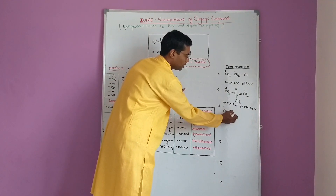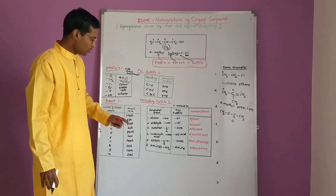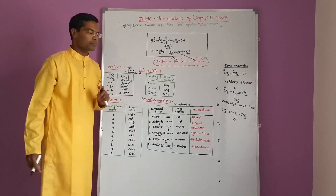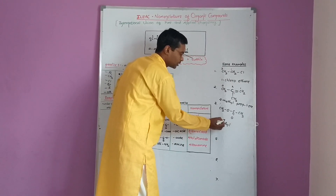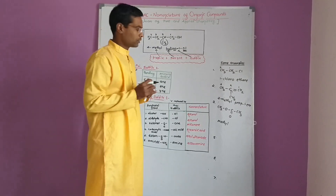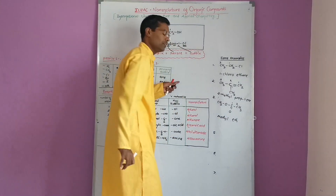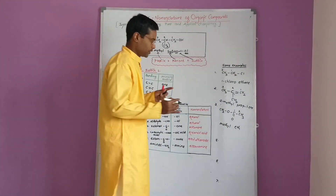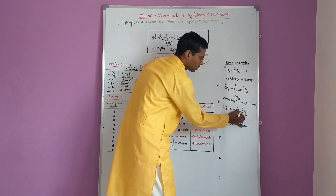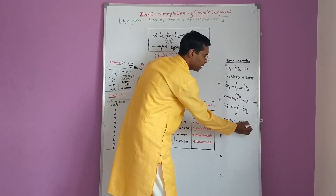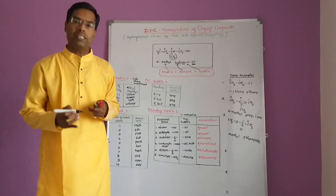Third example: CH3-O-C(=O)-CH3. This is an ester, because the functional group in an ester is the ester linkage. The methyl group attached to the O is taken as the substituent. Numbering the main chain: 1, 2 — so 'eth' is the parent name. With a carbon-carbon single bond, the primary suffix is ANE, and E is replaced by -OATE. Therefore, the name is methyl ethanoate.